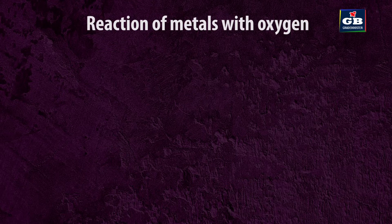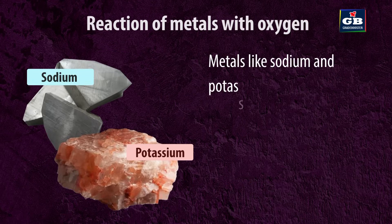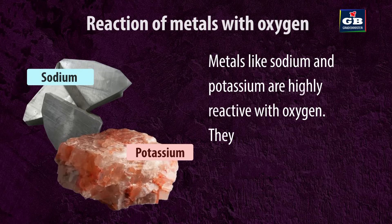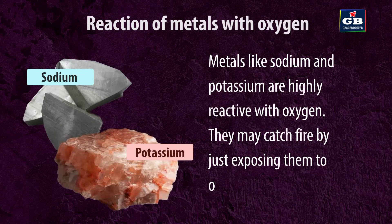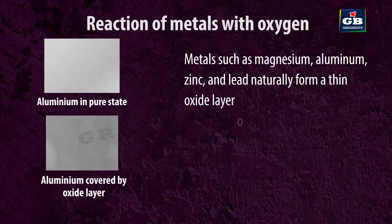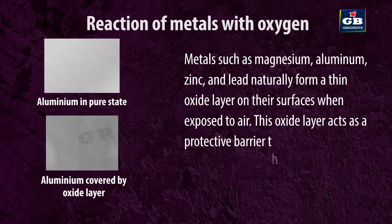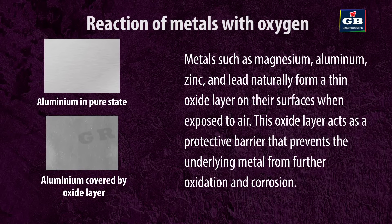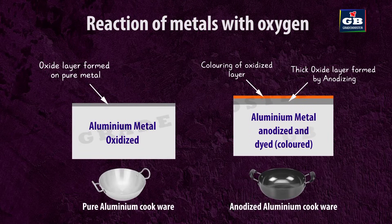Reaction of metals with oxygen. Metals like sodium and potassium are highly reactive with oxygen — they may catch fire just by exposure to oxygen. That is why they are stored by immersing in kerosene. Metals such as magnesium, aluminium, zinc, and lead naturally form a thin oxide layer on their surfaces when exposed to air. This oxide layer acts as a protective barrier that prevents the underlying metal from further oxidation and corrosion.